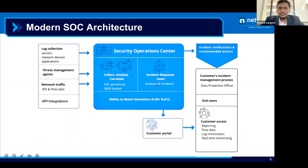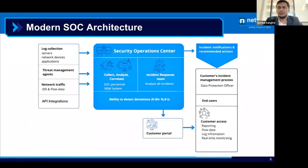Throughout this process, we also need to maintain dedicated SLAs for alerts based on the criticality or severity of triggers. There should be a customer portal where alerts and activities are visible, along with complete reporting — where logs and real-time monitoring information are available through dashboards. The expected output from a SOC team includes incident notification — as soon as an alert is triggered, you should be updated via mail, call, or any channel — along with recommended actions to be taken.